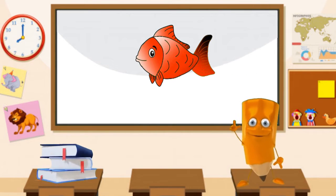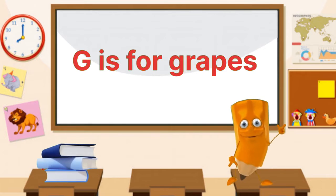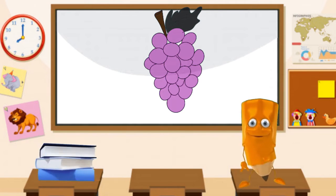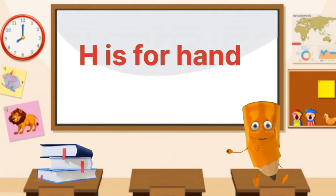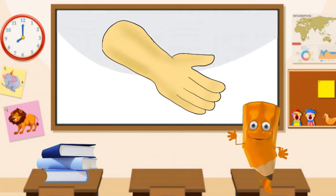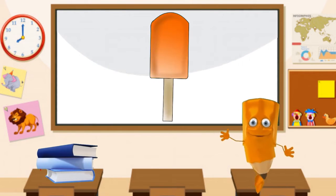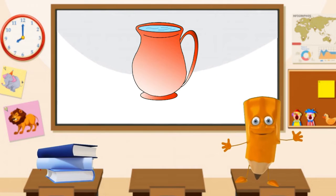face. G is for crabs, crabs, crabs. H for hand. I for ice cream. J for jug.